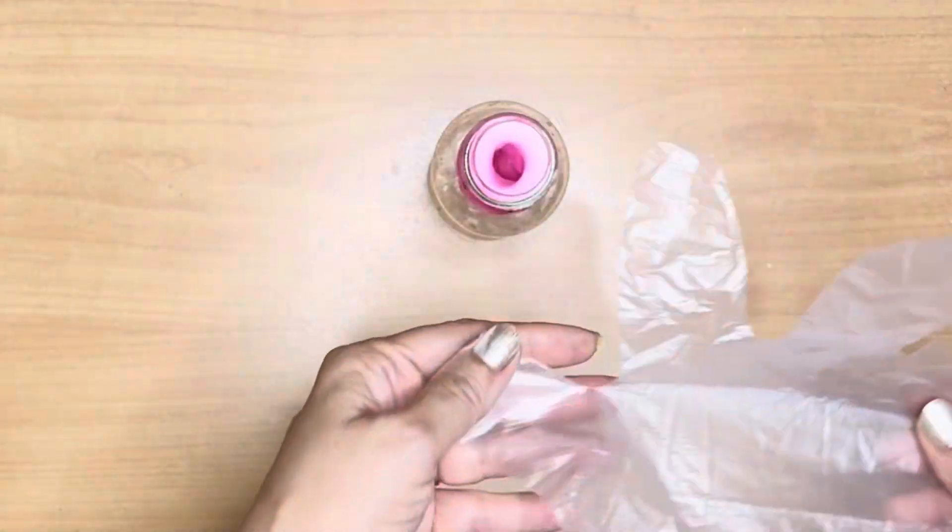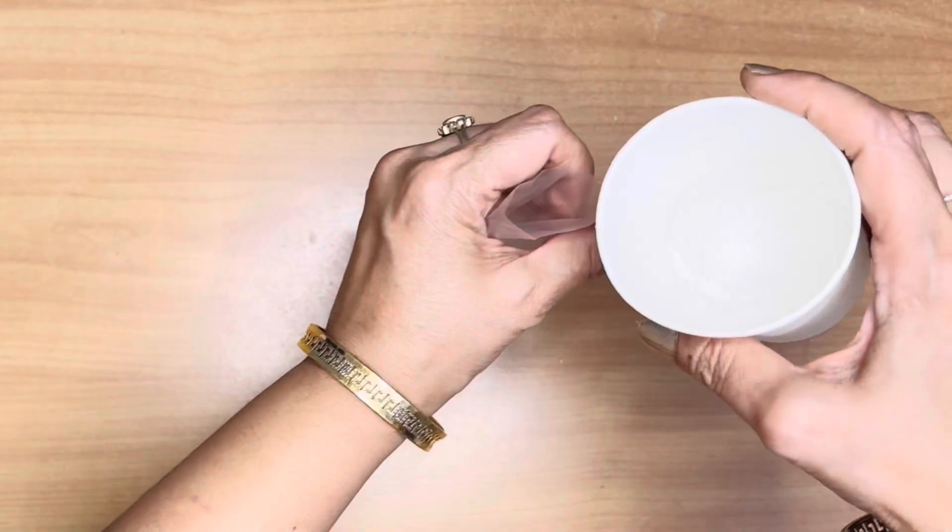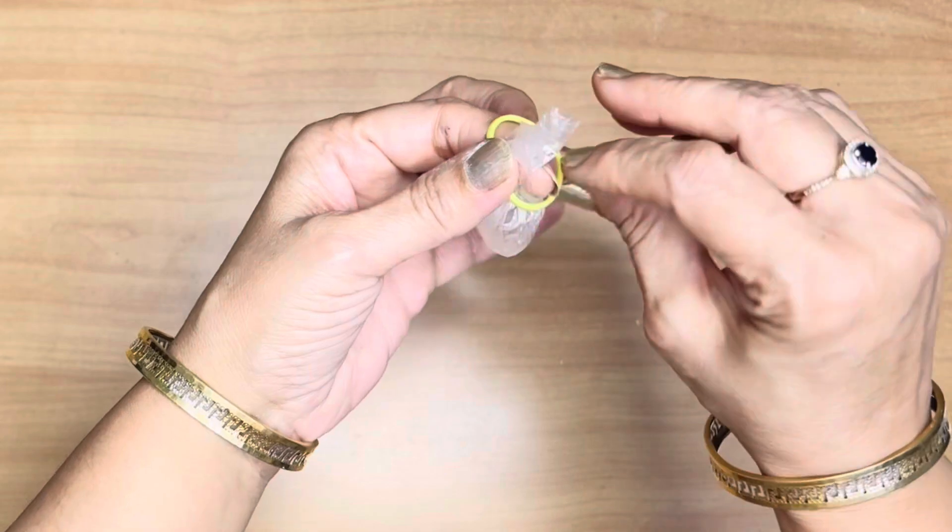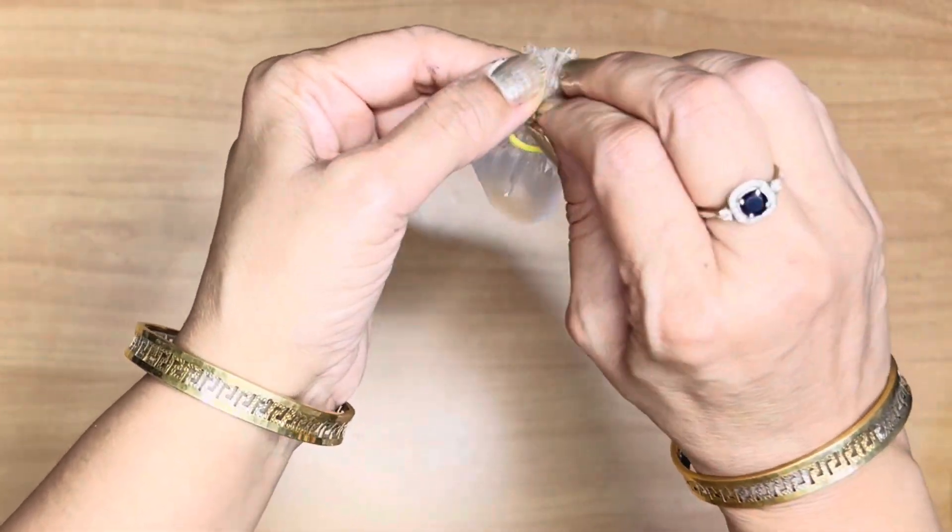Next trick. Cut one finger off the glove. Pour a little vinegar into it. Then tie it up like a tiny vinegar pouch with a rubber band.